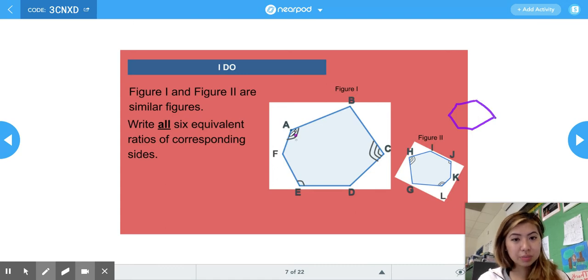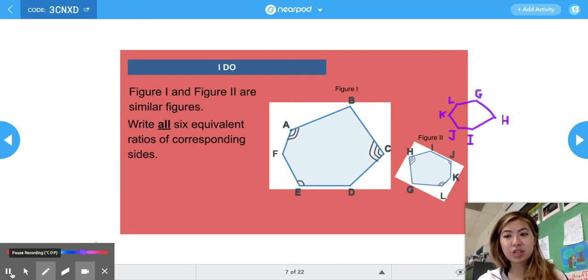So it's not perfect. But I know that this is C, it has one, two, three lines, and then this is the corresponding side. So this is going to be H right here. And then if it's rotated, then I know that this is I, J, K, L, G. So now it's easier for me to write my corresponding side ratios.